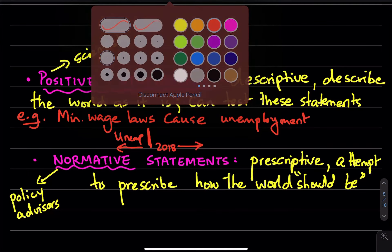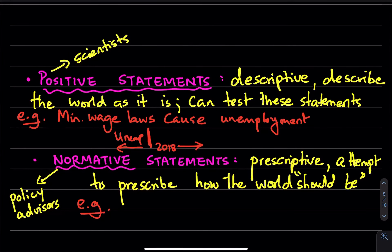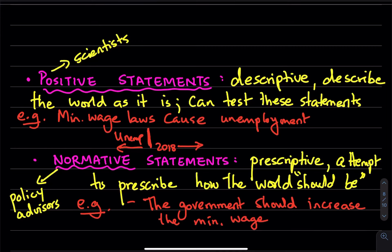So an example in terms of economics, I'll give you two examples. One is a statement like this: the government should increase the minimum wage. Now you can't test the statement, right? This is coming from a point of value judgment. This is sort of a prescription, this is what should happen. Or another statement could be: a fiscal stimulus is needed, what should happen during a pandemic.